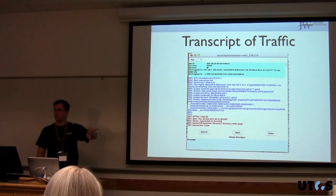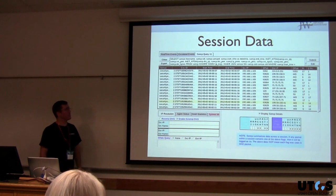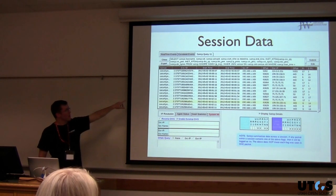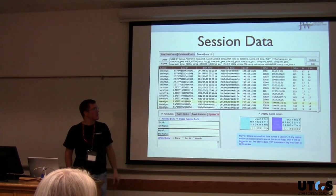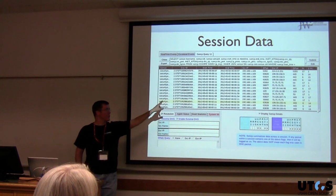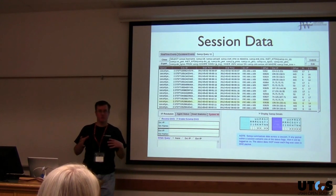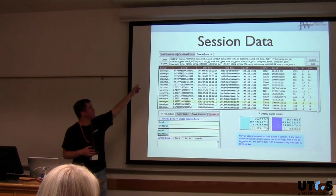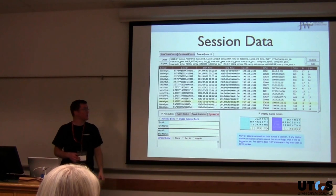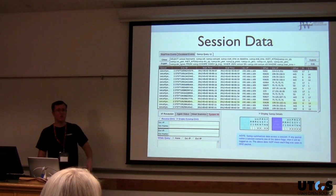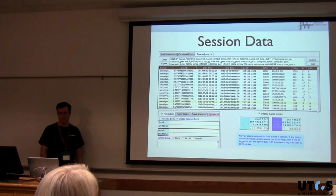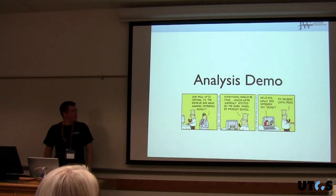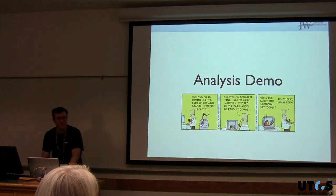I've gone from 'something bad has happened — the IDS is waving its arms' to 'something bad happened, this was the request, the server responded like this, and this was the data sent across the wire.' That's useful — that starts giving me information about how to respond. Back to that idea of NSM: data is guiding our response. For session data, you go to the query menu and can query SANCP data. I ran a query on my laptop for one day and it returned a thousand rows of every connection made.